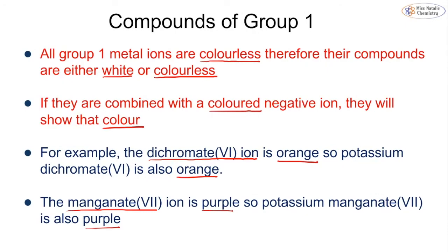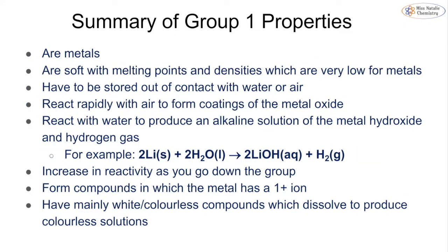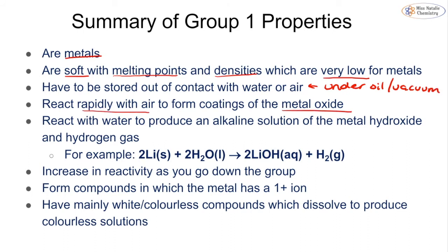To summarize the properties of group one: they are all metals, all soft, with melting points and boiling points that are quite low. They must be stored out of contact with water and air — stored under oil or in a vacuum. They react very rapidly with air to form a metal oxide, and they react with water to form an alkaline solution which we can check using an indicator.